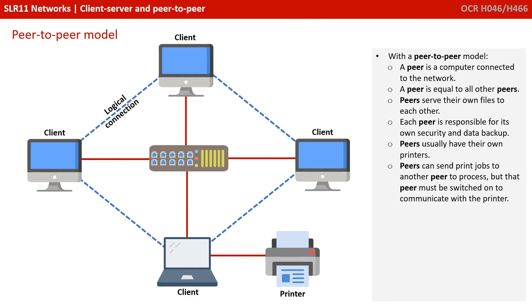With a peer-to-peer model, a peer is a computer connected to a network. A peer is equal to all other peers. Peers are responsible for serving their own files to each other, and each peer is responsible for its own security and data backup. Peers usually have their own printers, and peers can send print jobs to another peer to process, but that peer must be switched on in order to communicate.